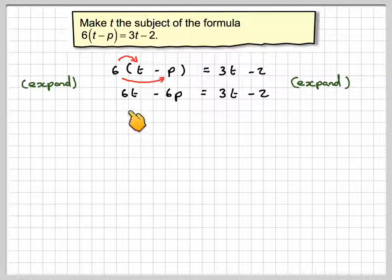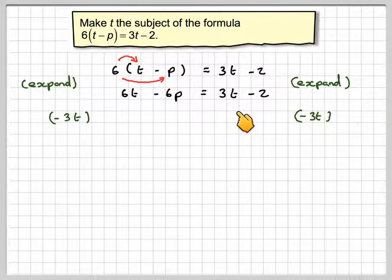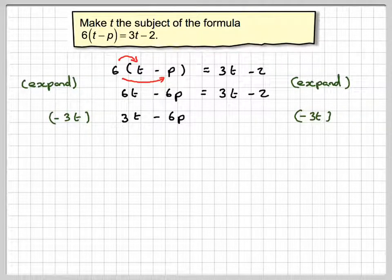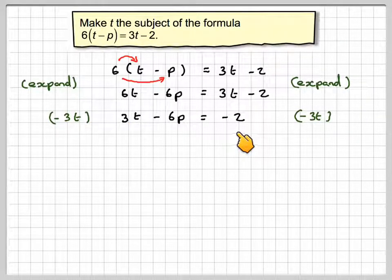Right, now we either look at 6t and 3t, and we see which is the smallest, which is 3t, and we do the opposite. So we're going to subtract 3t. 6t - 3t gives me 3t - 6p = -2.